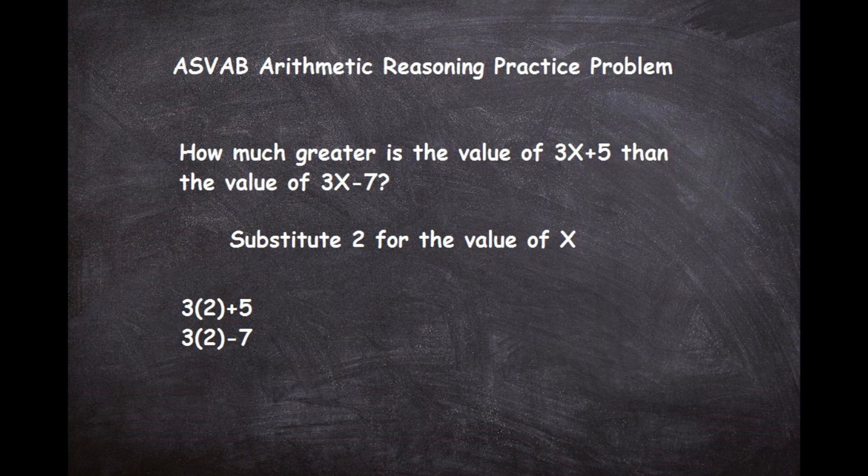Now all we have to do is just simply solve the equation. What we'll find is that when you multiply 3 times 2 it's 6 plus 5, that makes 11. And when we multiply 3 times 2 which is 6, 6 minus 7, that's negative 1.